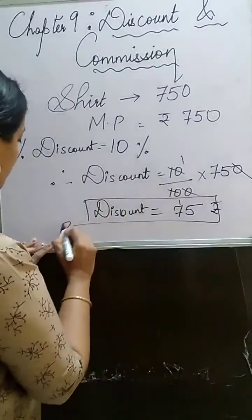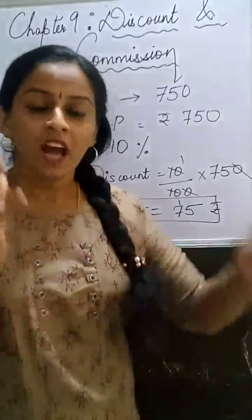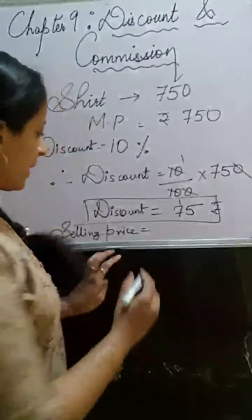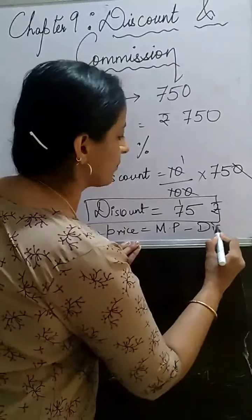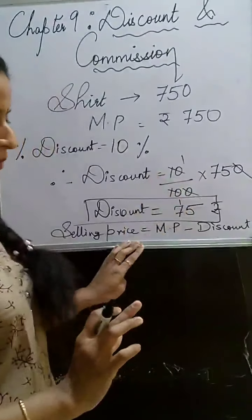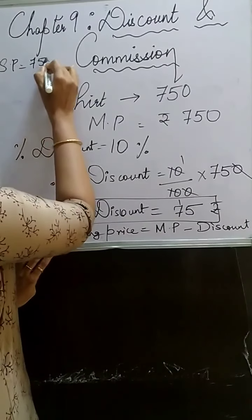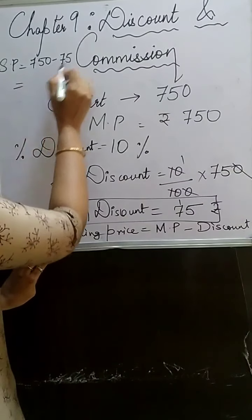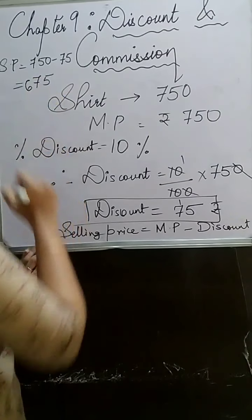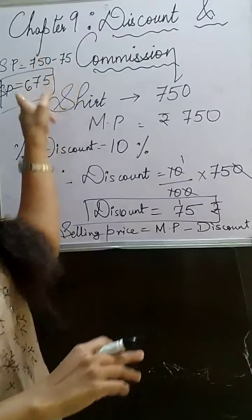So how much will we pay the shopkeeper? The amount you pay after discount is called the selling price. Selling price = Marked price minus Discount. Marked price was ₹750, discount is ₹75. So selling price = 750 − 75 = ₹675. You are paying less than what was on the price tag — that means you got a discount from the shopkeeper.